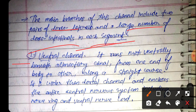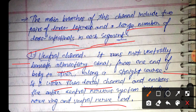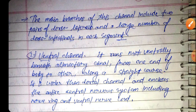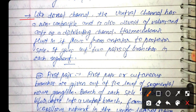The ventral channel runs mid-ventrally beneath the alimentary canal and is wider than the dorsal channel. It covers the central nervous system. The ventral channel also has a non-contractile wall devoid of valves and acts as a distributing channel.